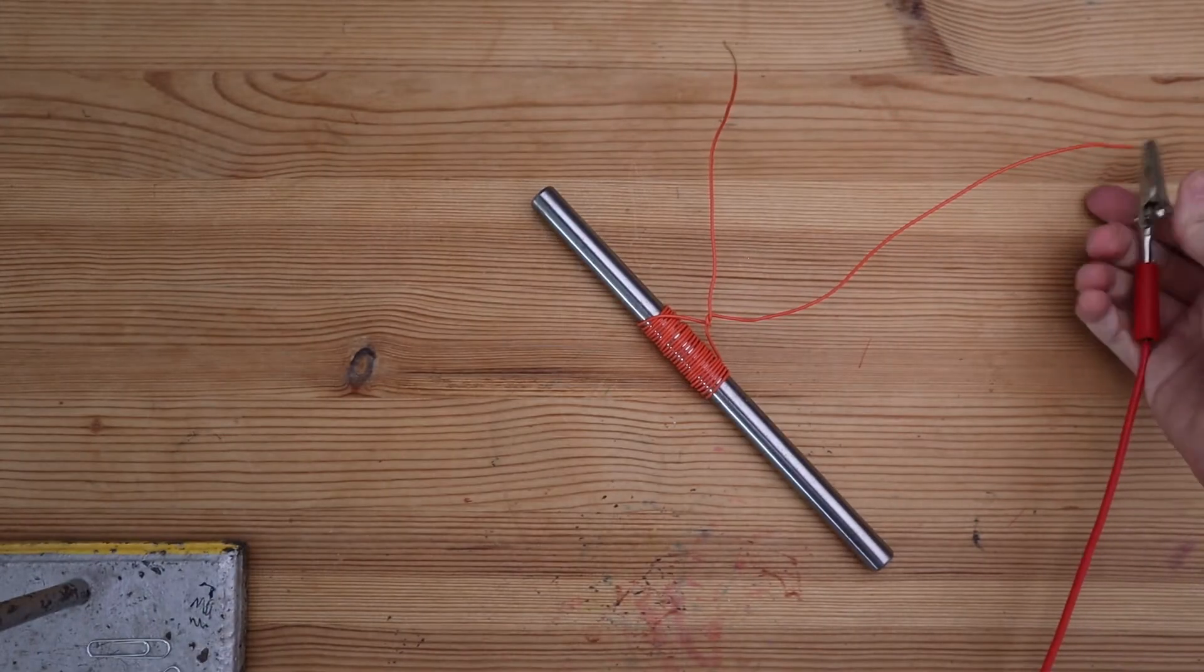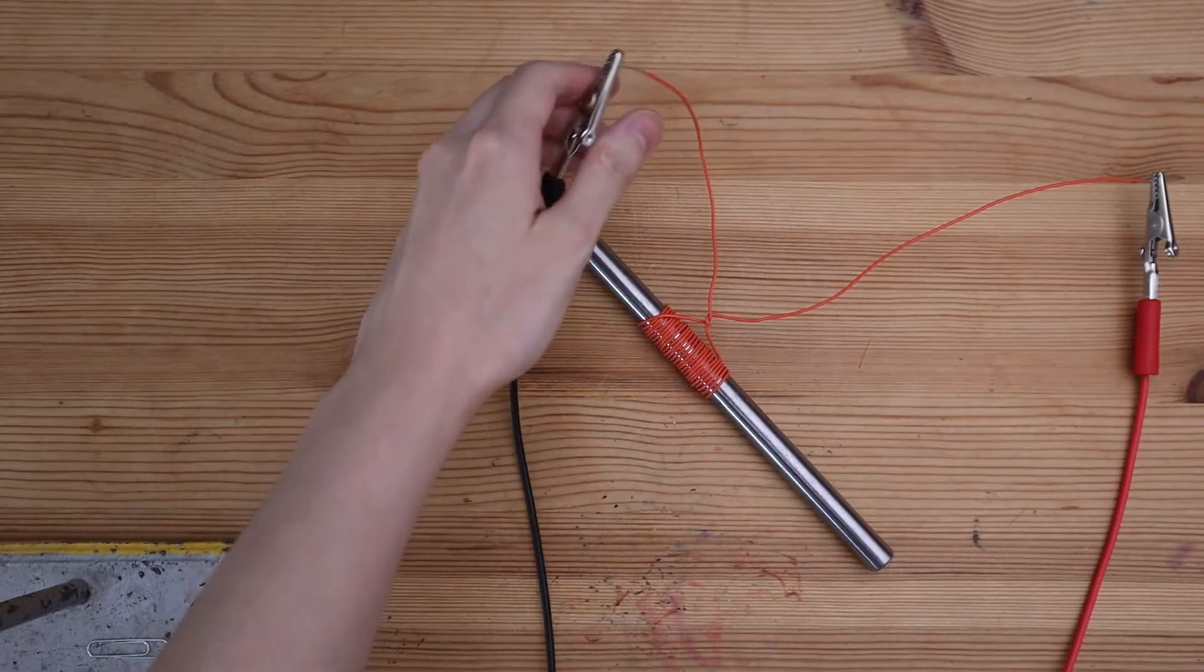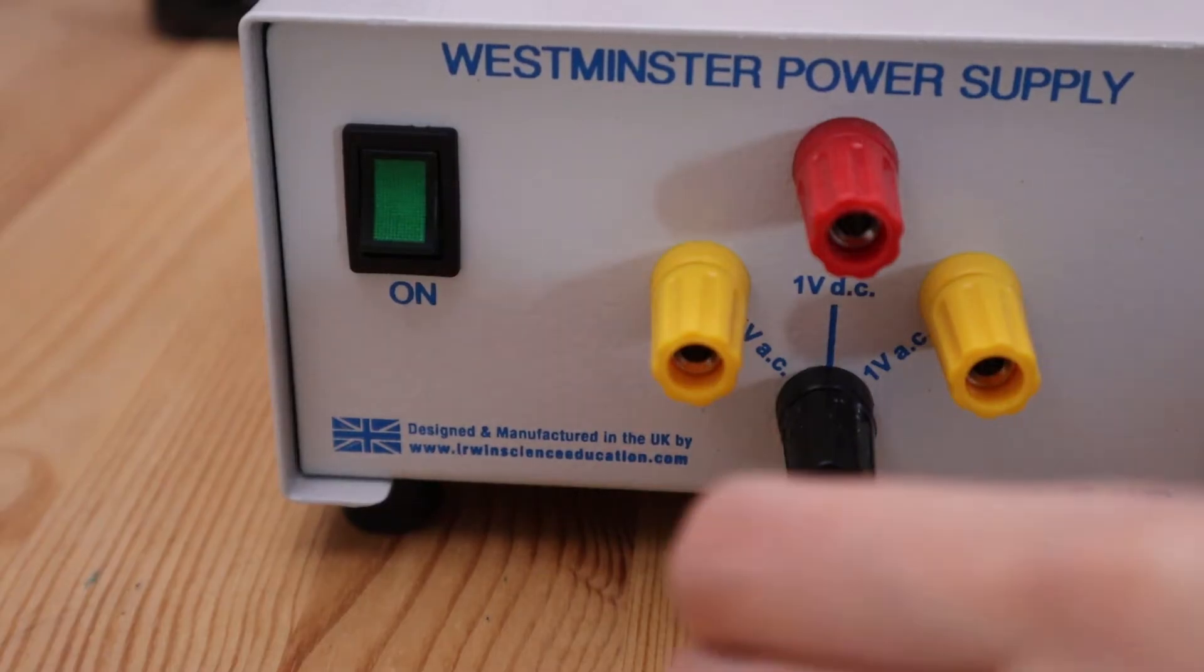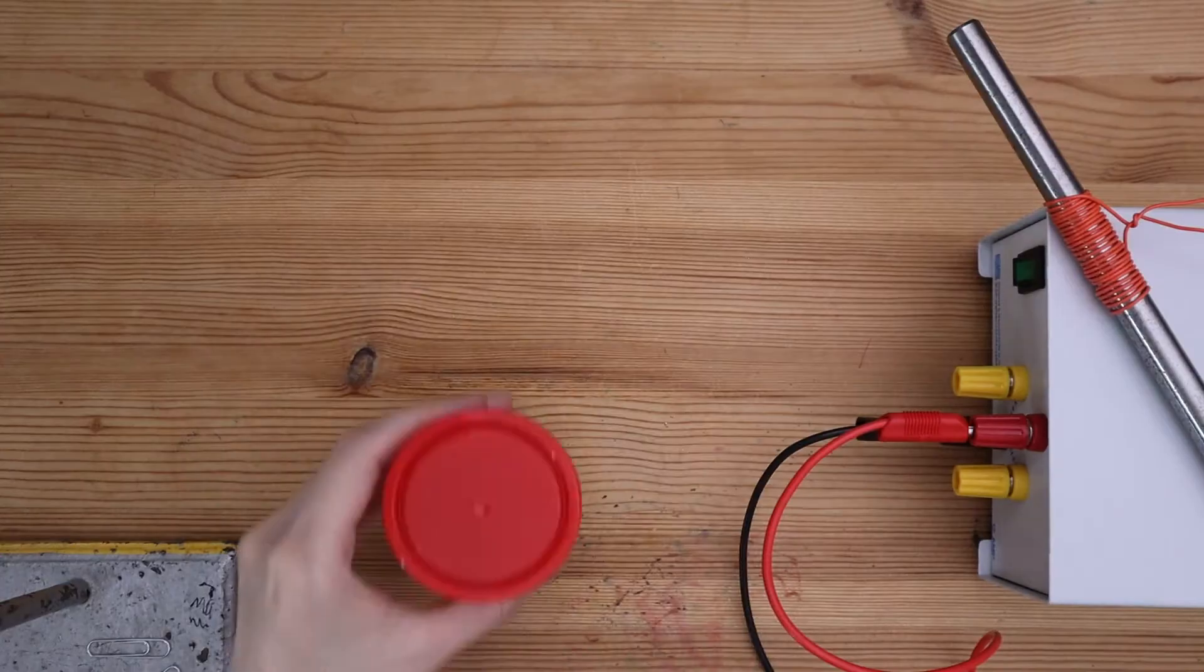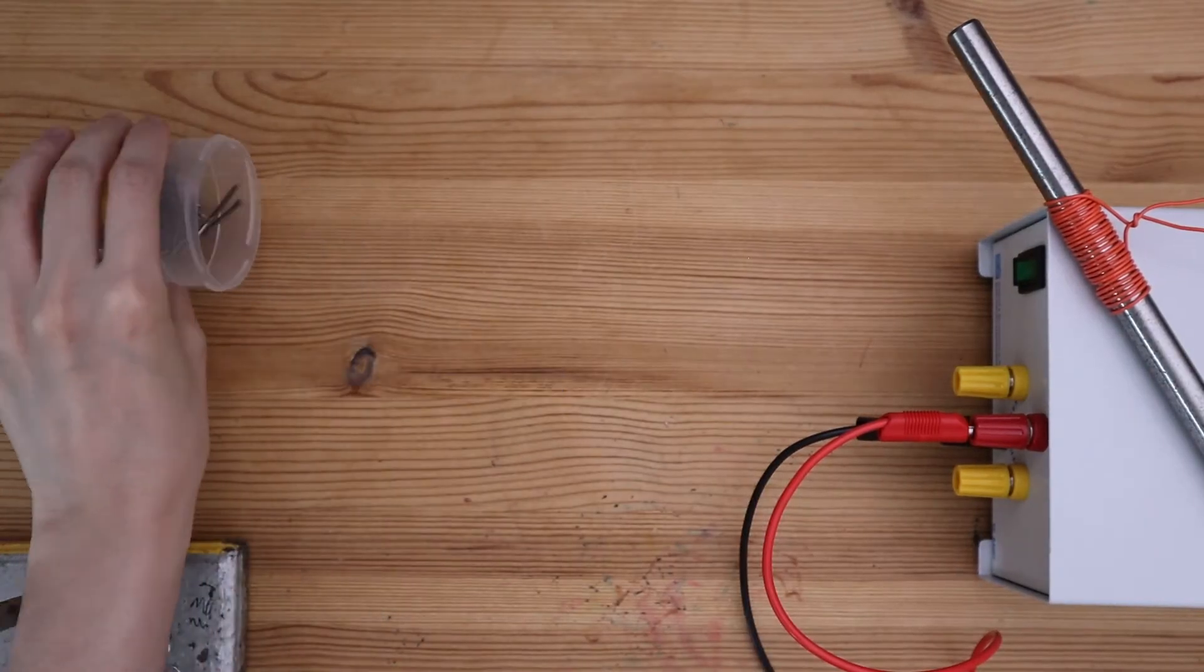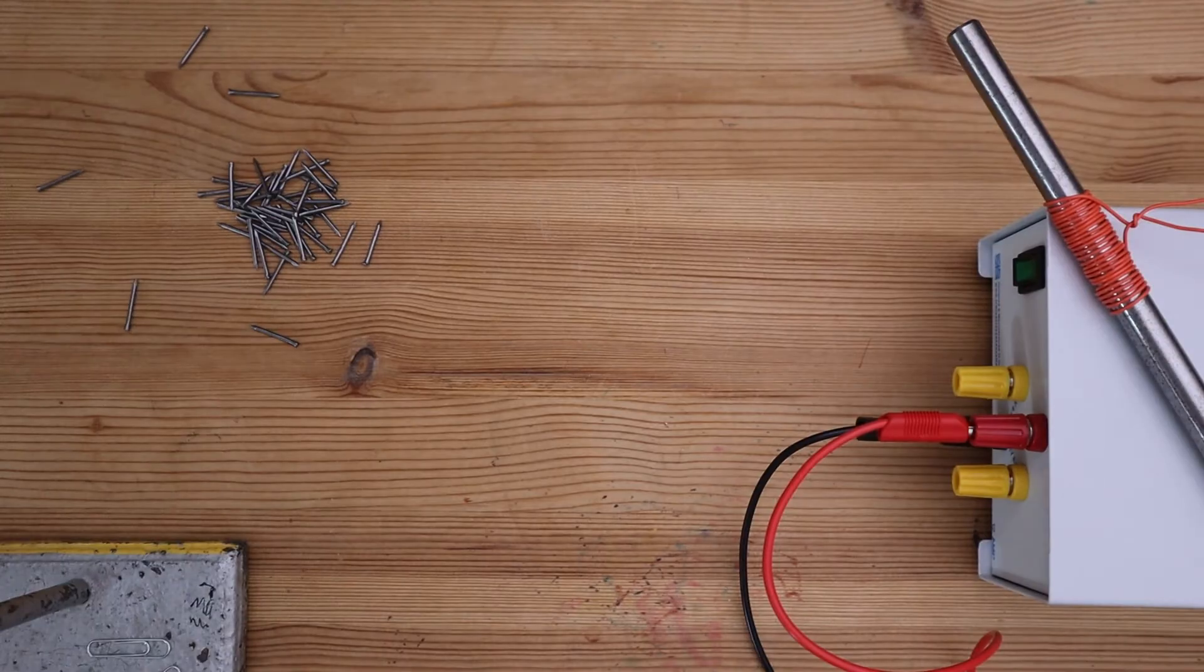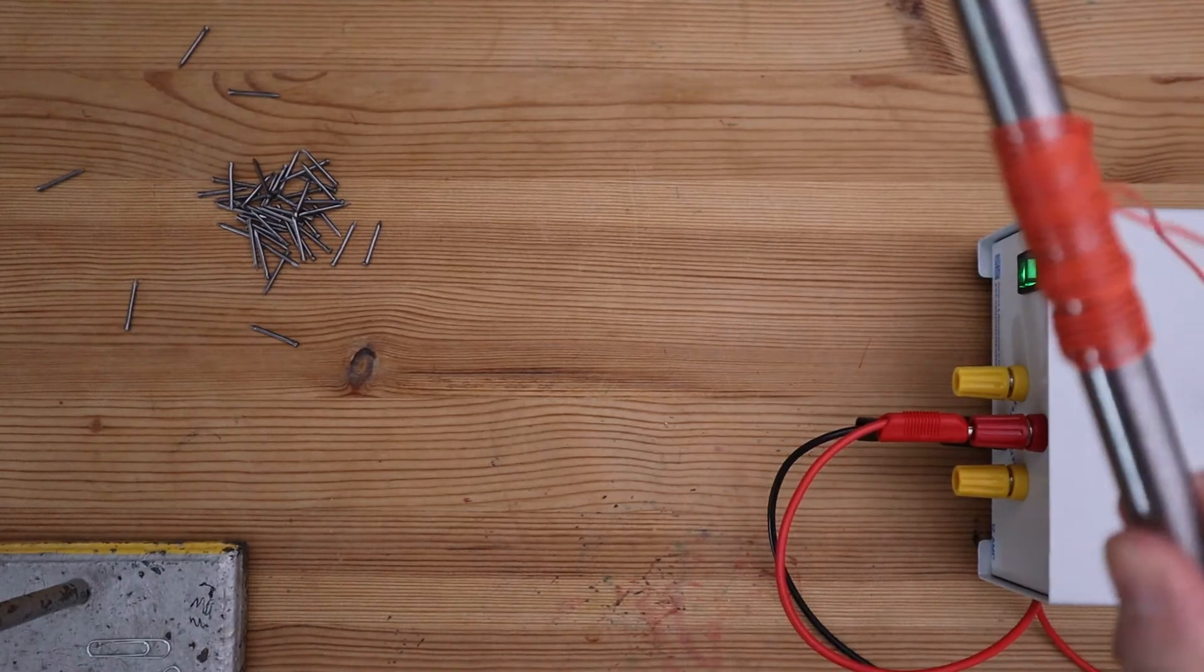Attach the crocodile clips to the electromagnet and plug the leads into the DC terminals of the power supply. Time to test our electromagnet. The more iron nails the electromagnet can attract, the stronger the electromagnet is.